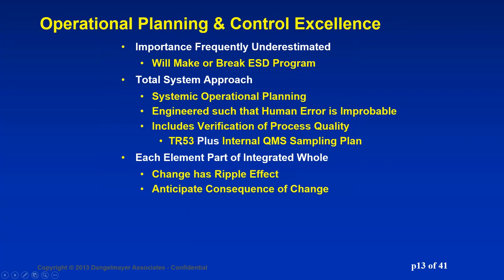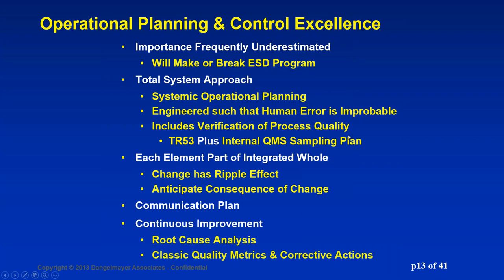Many companies rely just on TR-53, which is the auditing instruction associated with 2020. We have found that if you go one step further and add this QMS sampling plan, that is what brings all the pieces together — the secret sauce. Communication plan and continuous improvement are also key. The way you do continuous improvement is through root cause analysis. If you have a good auditing system with appropriate tracking metrics, you can use that information to manage the process. And then of course, corrective actions.